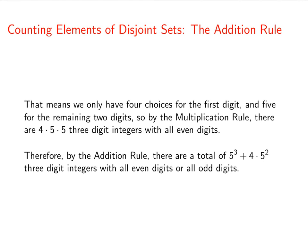If we put this all together, the addition rule tells us there are a total of 5³ + 4 × 5² three-digit integers with all even digits or all odd digits. That's all for now.